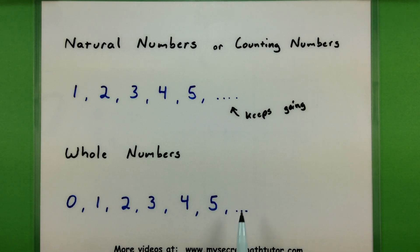1, 2, 3, 4, 5, and of course these keep going as well, all of these are types of whole numbers.